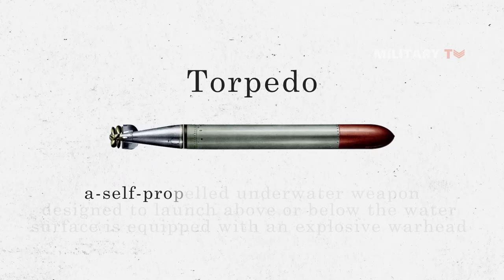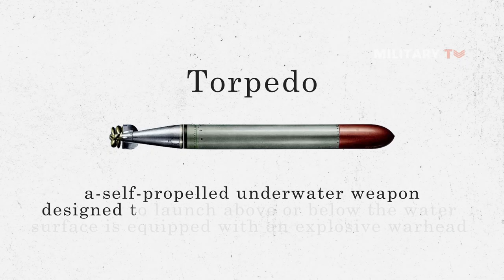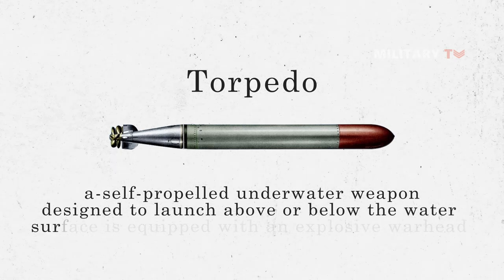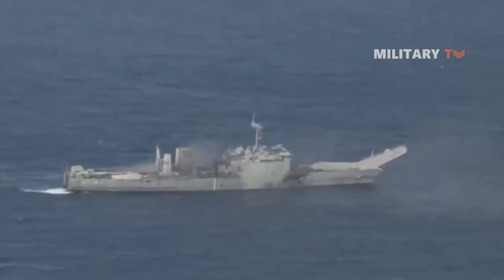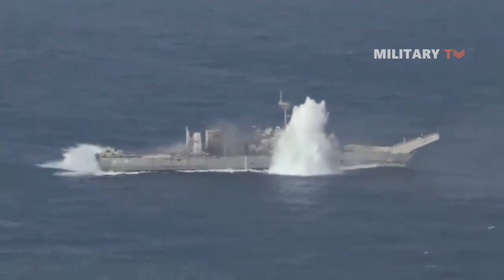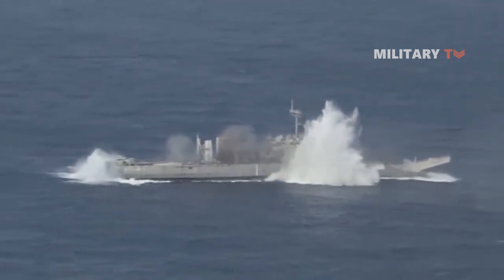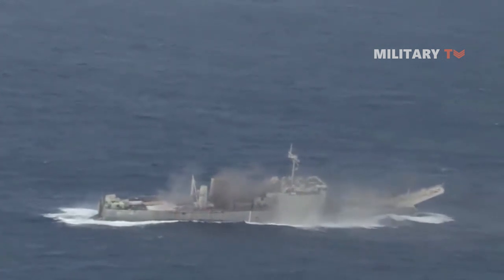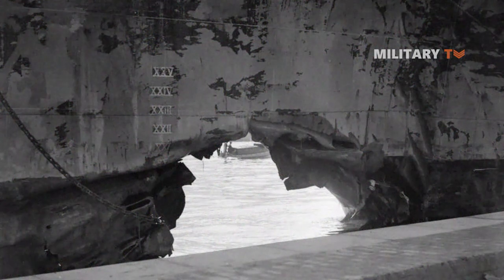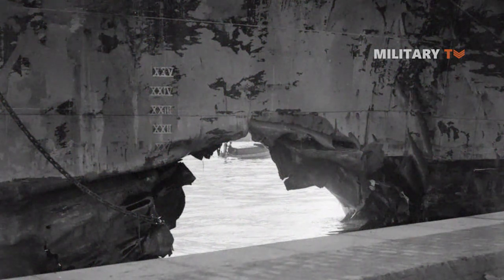Torpedo, a self-propelled underwater weapon designed to launch above or below the water's surface, is equipped with an explosive warhead. It can detonate on contact with or in proximity to the targets. This underwater projectile has been used from the 19th century for battleships and had a great effect during World War I.